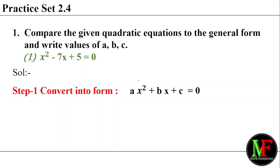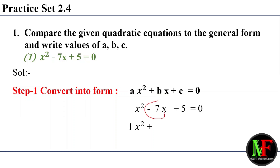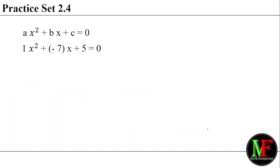The standard form is: ax squared plus bx plus c equal to 0. We compare our equation. If there is a plus sign and if there is a minus sign, we make it match. So our equation becomes 1x squared plus minus 7x plus pi equal to 0. These two equations are now in our standard form.